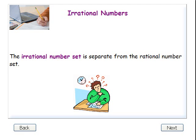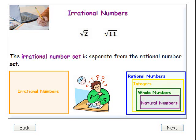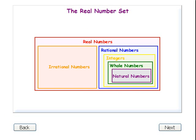An irrational number is a decimal number that does not terminate or repeat. These numbers cannot be written as a fraction of two integers. Here are some examples of irrational numbers. The irrational number set is separate from the rational number set. The last number set we will introduce is the real number set — the real number set is just the combination of the rational and irrational number sets.